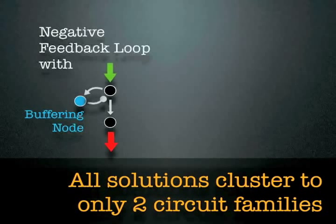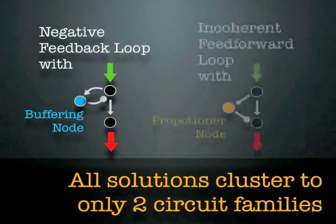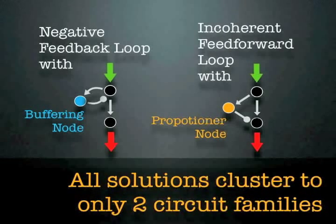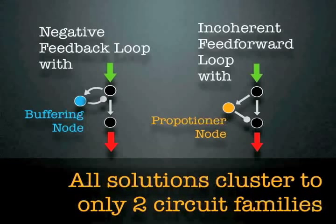The first family comprises negative feedback loops, in which feedback is controlled by a regulatory node that plays a buffering role to limit pathway output. Specific kinetic parameters are required for the buffering node. The second family of adaptive circuits comprises incoherent feed-forward loops, in which the regulatory node acts as a proportioner. The regulatory node inactivates the output node in proportion to the degree to which it is activated by the input node. Again, this circuit requires specific parameter values to yield a proportioner node.